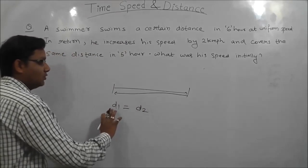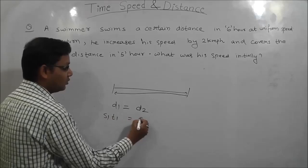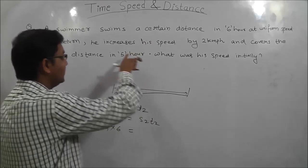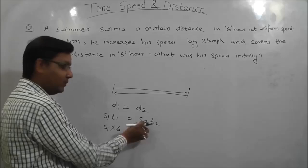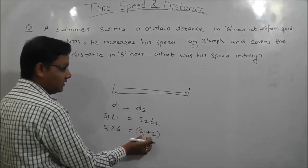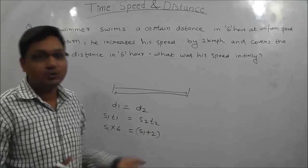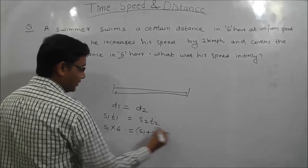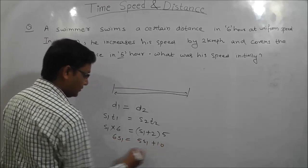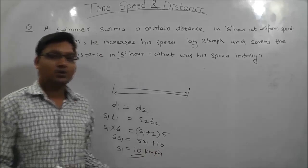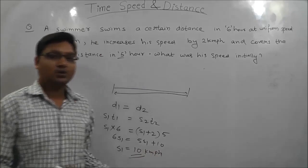Using D = speed × time: S1 × 6 = (S1 + 2) × 5. Solving: 6S1 = 5S1 + 10, so S1 = 10 km per hour. That is the initial speed. In this type of question, identify the constant quantity, equate the terms, and you can easily find the answer.